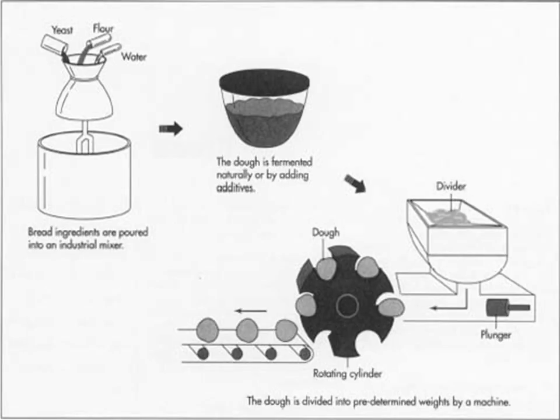Firstly, understand how bread is made. The basic method to prepare bread is by mixing flour and other ingredients like milk, egg, sugar, spice, or fruits with water, followed by the process of fermentation and then cutting the dough into the required shape of bread. That is the traditional method, but there are several other advanced methods as well.